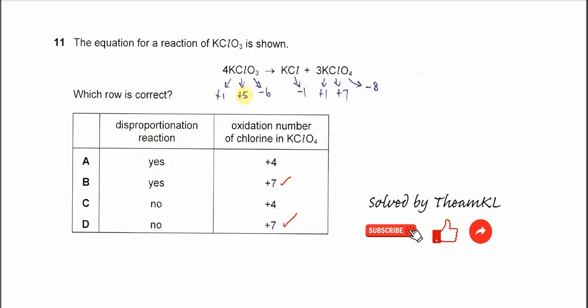Before the reaction, the oxidation state of chlorine is positive 5, because oxygen is negative 6, negative 2 times 3, so it's negative 6. Potassium is positive 1, so chlorine must be positive 5. Therefore, the compound is neutral.